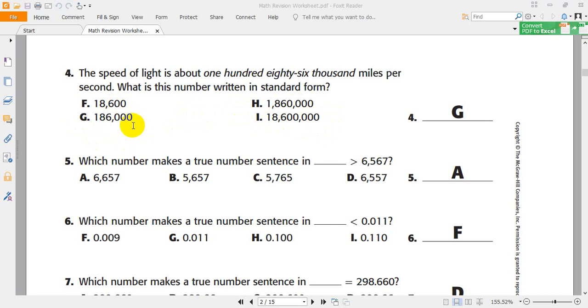Which number makes a true number sentence? We need to choose one from here will be bigger than 6,567. All of them are less than this number except A. Because A, 6,600. Here, 6,500. So, the right answer must be A.